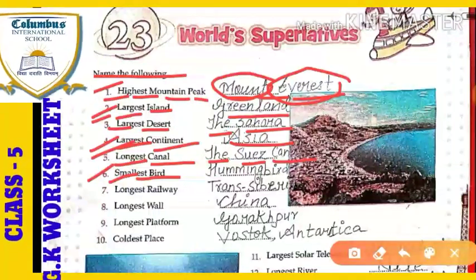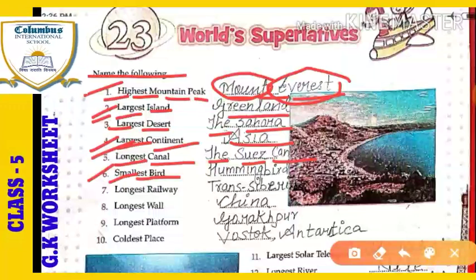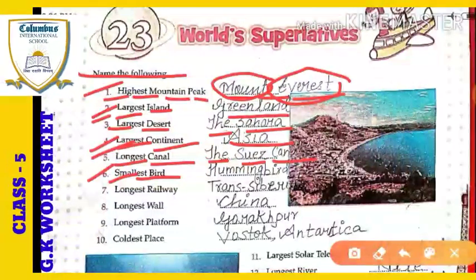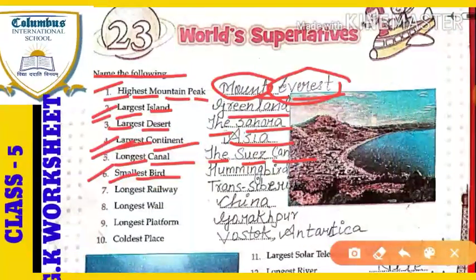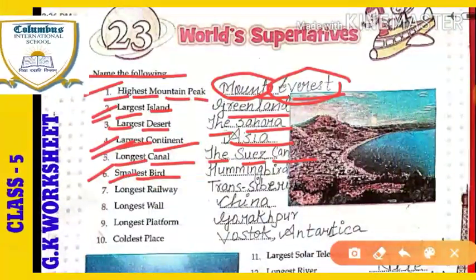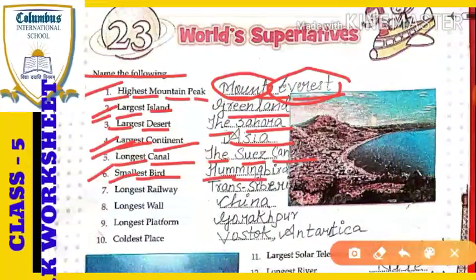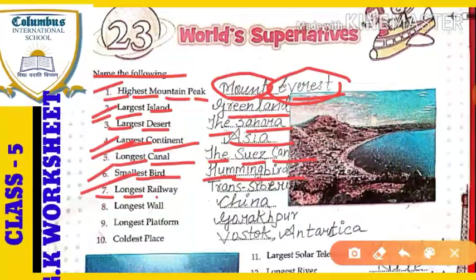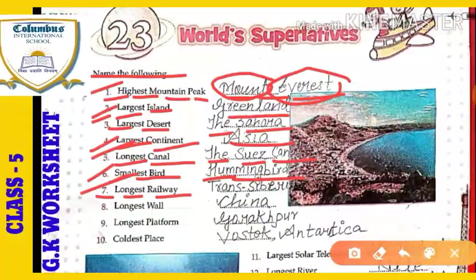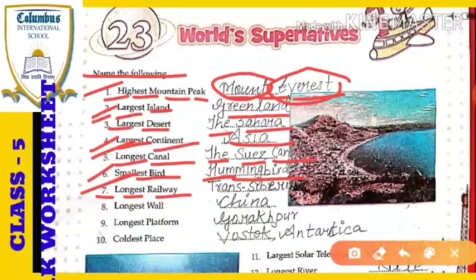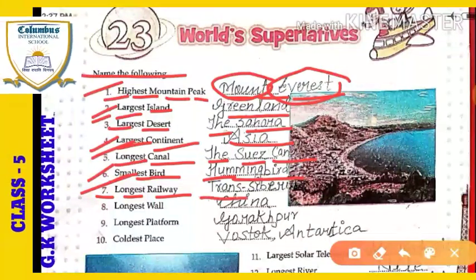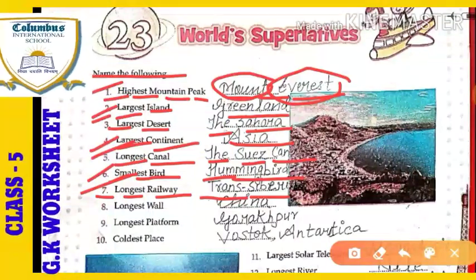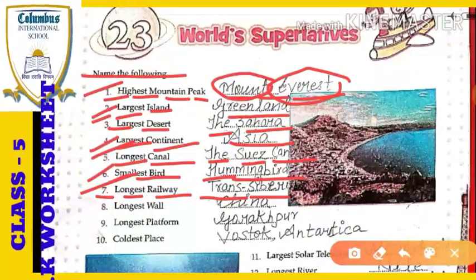The last one in this set is the smallest bird. Hope you all have read about the smallest bird in the previous chapter and remember the answer. That bird is called the hummingbird — the hummingbird is the world's smallest bird. Next: the longest railway. Which is the longest railway of the world? That is called the Trans-Siberian railway — the Trans-Siberian railway is the longest railway of the world.